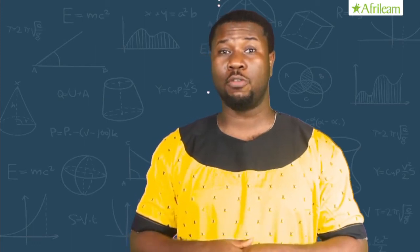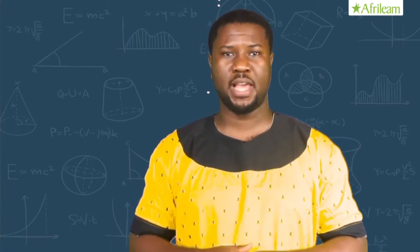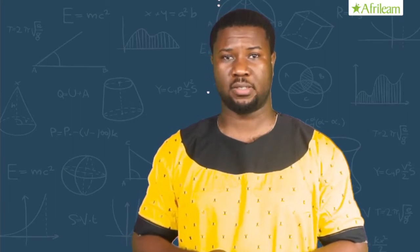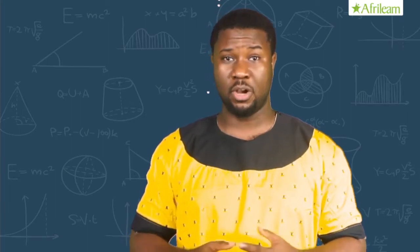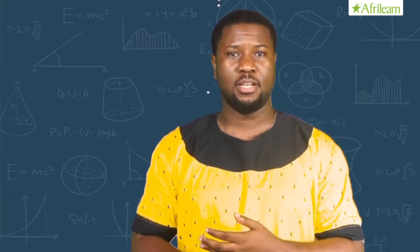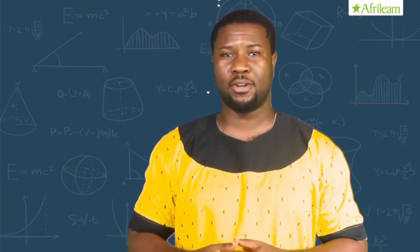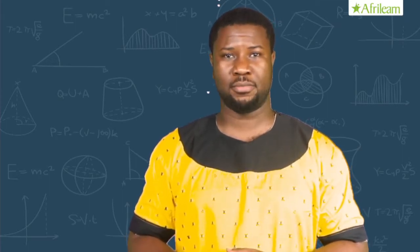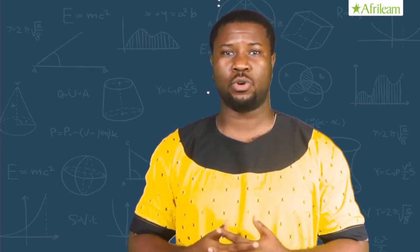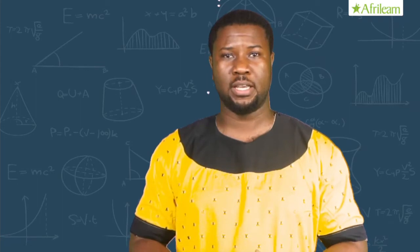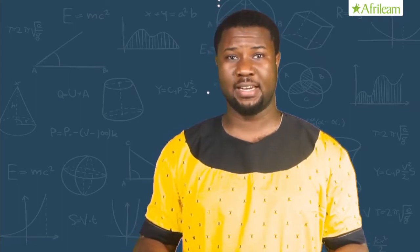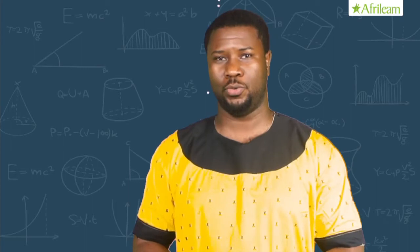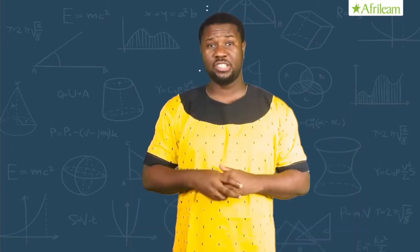Let us solve the next inequality. To solve this, we collect like terms: 12X minus 2X and 13 minus 7. We now have 10X equal to 20. Dividing both sides by 10, we finally have X equal to 2.